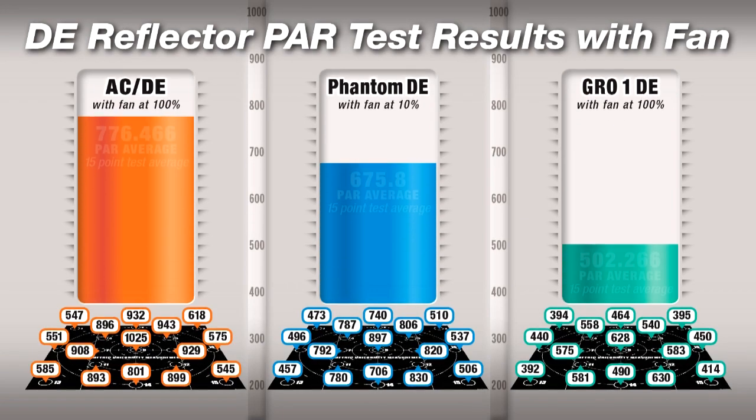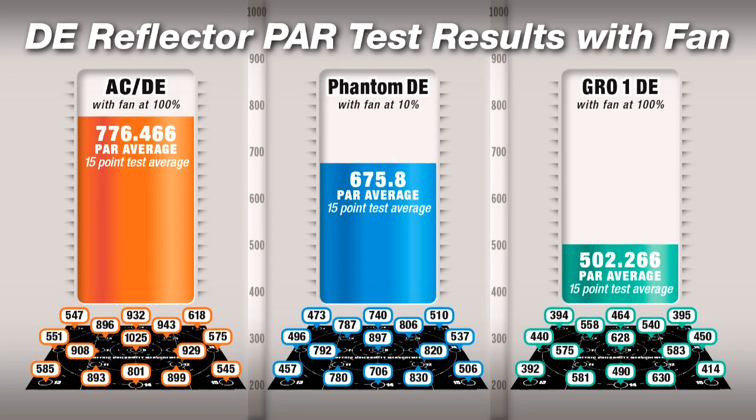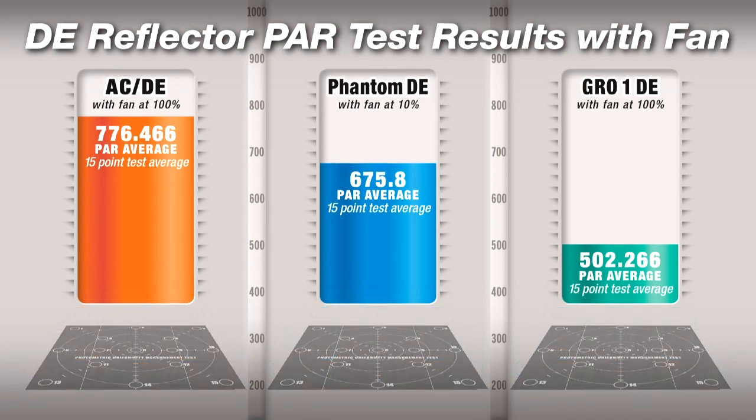A 776 PAR output average for the AC-DE, a 675 PAR output average for the Phantom DE, and a 502 PAR output average for the GROW 1 DE.